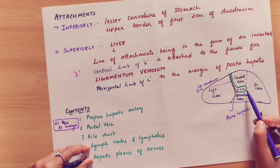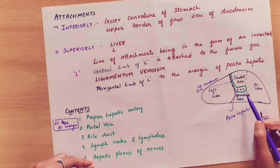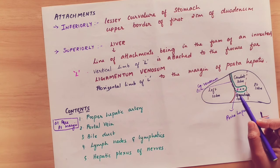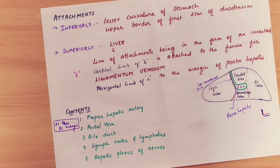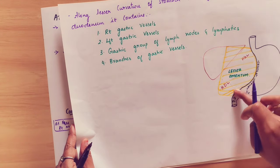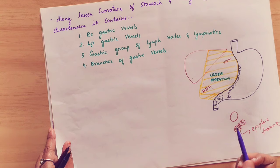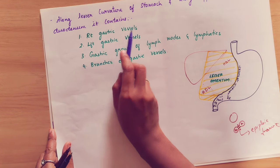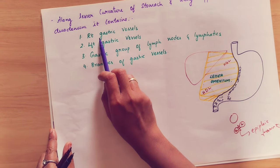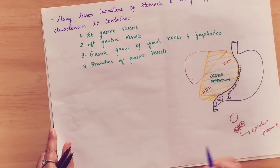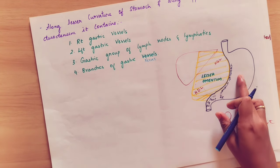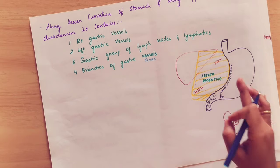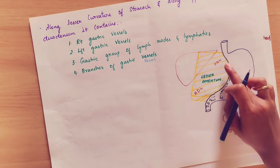Along the lesser curvature of the stomach, the right gastric vessel and left gastric vessel are present. You can study these via the coeliac trunk. Lymph nodes and lymphatics are also present along the lesser curvature.